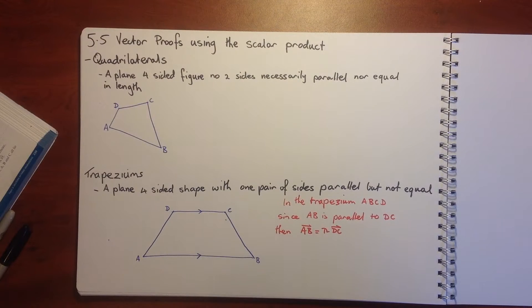So to start off, we're just going over and defining some different shapes and their properties. A quadrilateral is a plane four-sided figure with no two sides necessarily parallel nor equal in length.